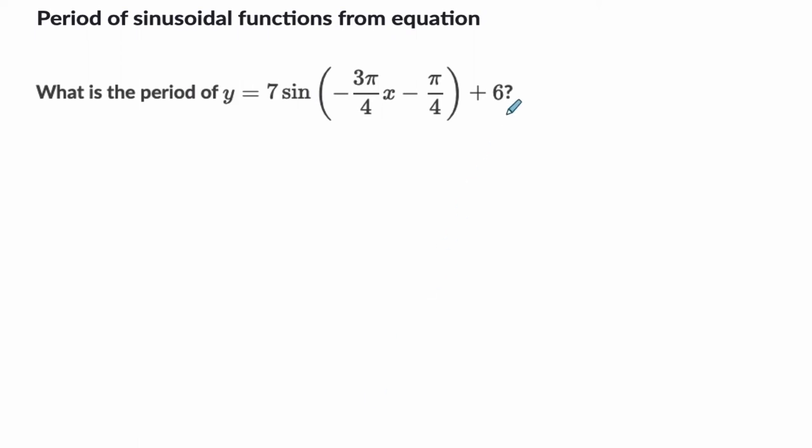The anatomy of this equation is that we have a midline right here. This is our midline. So it's at y equals six. We have an amplitude right here. It's the absolute value of that number equals seven. That's our amplitude.